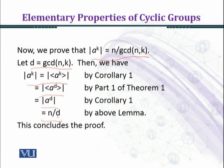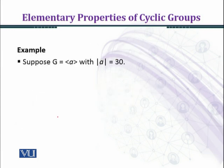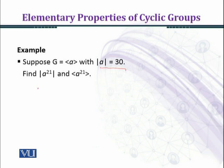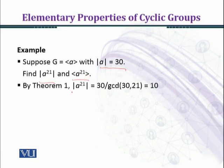Now we consider an example. Suppose G is a group generated by a and the order of a equals 30. Find the order of a^21 and find the cyclic group generated by a^21. By Theorem 1, the order of a^21 equals 30, the order of a, over GCD of 30 and 21, and the GCD of 30 and 21 is 3.